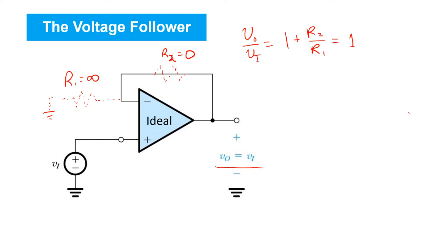But the key point is that like any non-inverting configuration, the input resistance is infinite. So there's no current drawn from the input source Vi. That's very unlike a short circuit where current can flow from Vi to Vo. Here the op-amp provides whatever current is needed at the output voltage Vo. So the output voltage simply follows whatever the input voltage is without drawing any current from it. This is very useful as we'll see in the next exercise.